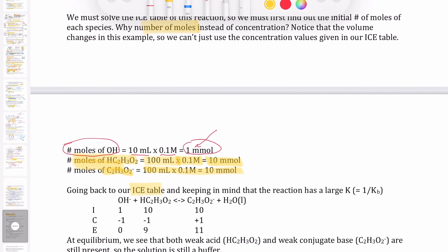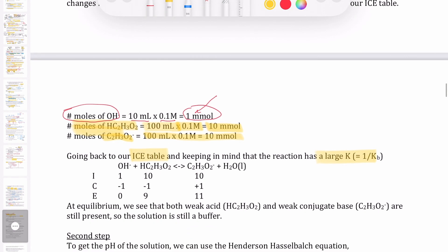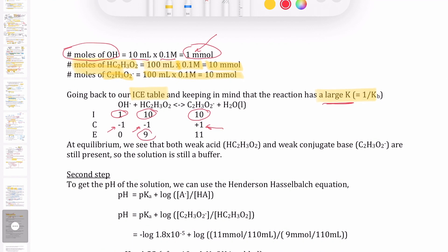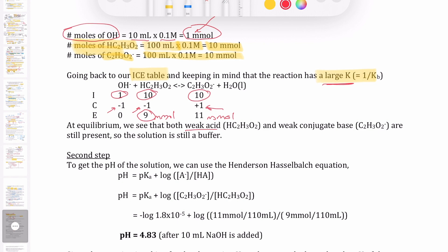Now we do the ICE table for the neutralization reaction, using millimoles. Initial values: 10 mmol HA, 1 mmol OH⁻, 10 mmol A⁻. Since this is a large K reaction, it goes to completion — we lose all of the limiting reactant, which is the strong base. Change: −1 for OH⁻, −1 for HA, +1 for A⁻. Final: 9 mmol HA and 11 mmol A⁻ remaining. We still have both weak acid and conjugate base, so we still have a buffer.